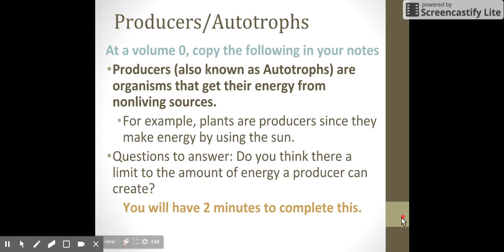So to start off, we're going to talk about producers and autotrophs. Producers and autotrophs are organisms that get their energy from non-living sources. One of the big examples we have here are plants, since they produce energy by using the sun.